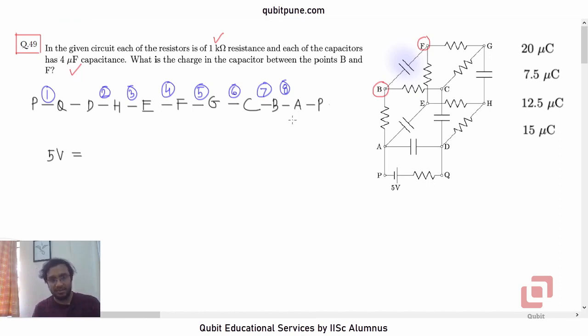So there are 8 resistors and each one of them is of 1 kilo ohm. So it will be current I into 1 kilo ohm is one single resistance into 8. So how much will I be? I will be equal to 5 divided by 8 into 10 to the power 3 amperes. This is by Ohm's law. So we have found out the current. This is part 1 of the problem.